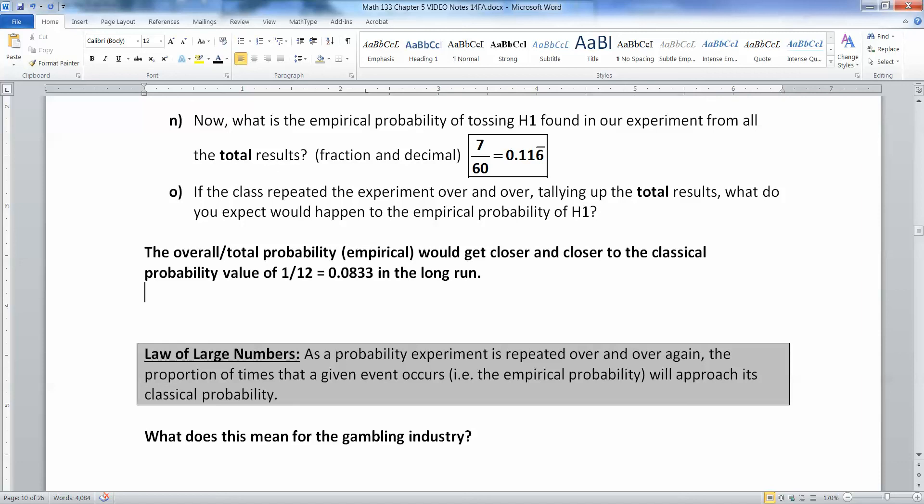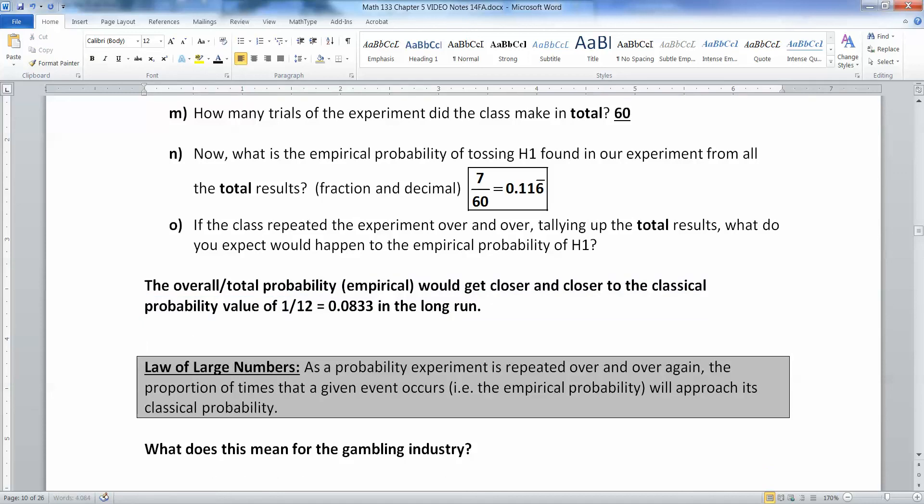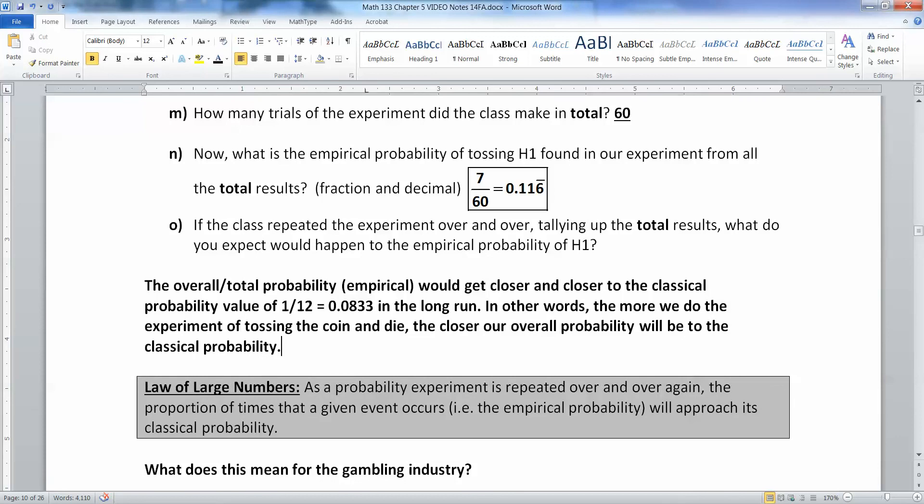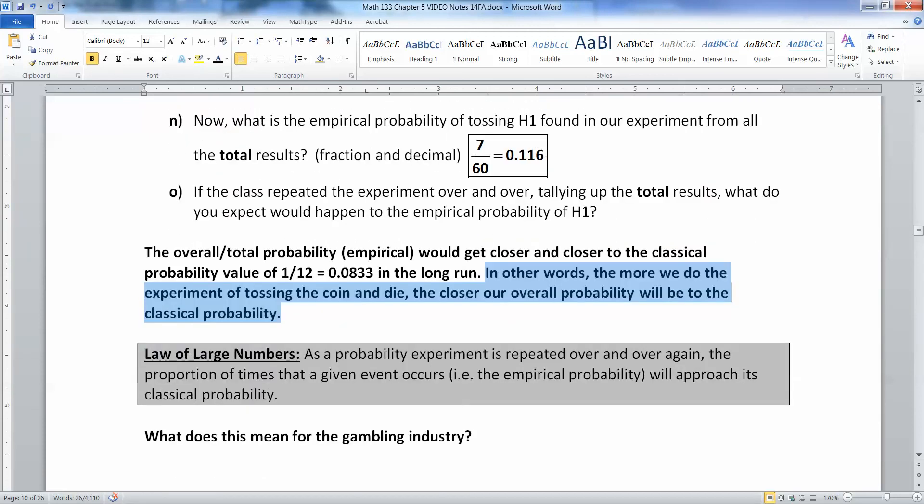Now, this leads us to the law of large numbers. What that's saying is that if you repeat a probability experiment over and over and over, if you play this hand of cards over and over, if you roll this die over and over, if you toss this coin over and over, that in the long run, your proportion of times that your given event occurs, i.e. the empirical probability, will approach its classical probability. That's what classical probability is. It's that hypothetical probability that we know is there as the foundation. And then the empirical probability is what we actually see in real life, because, of course, we don't expect it to be exactly the classical probability. We expect it to be close to the classical probability. And the more you do it, the larger, or I mean, the closer it will be. In other words, the more we do the experiment of tossing the coin in the die, the closer our overall probability will be to that classical probability that we expect.